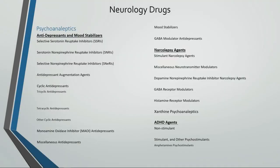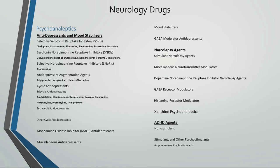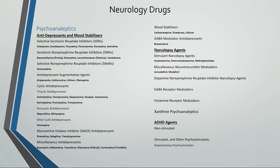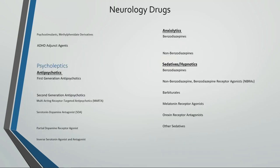Moving on to neurology drugs. In the psychoanaleptics class, there are antidepressants and mood stabilizers consisting of SSRIs, serotonin-norepinephrine reuptake inhibitors, selective norepinephrine reuptake inhibitors, antidepressant augmentation agents, cyclic antidepressants including tricyclic and tetracyclic antidepressants, monoamine oxidase inhibitor antidepressants, miscellaneous antidepressants, mood stabilizers, and GABA modulator antidepressants. Narcolepsy agents include stimulant narcolepsy agents, miscellaneous neurotransmitter modulators, dopamine-norepinephrine reuptake inhibitor narcolepsy agents, GABA receptor modulators, and histamine receptor modulators. ADHD agents include non-stimulant, stimulant, and other psychostimulants including amphetamines, methylphenidate derivatives, and ADHD adjunct agents.